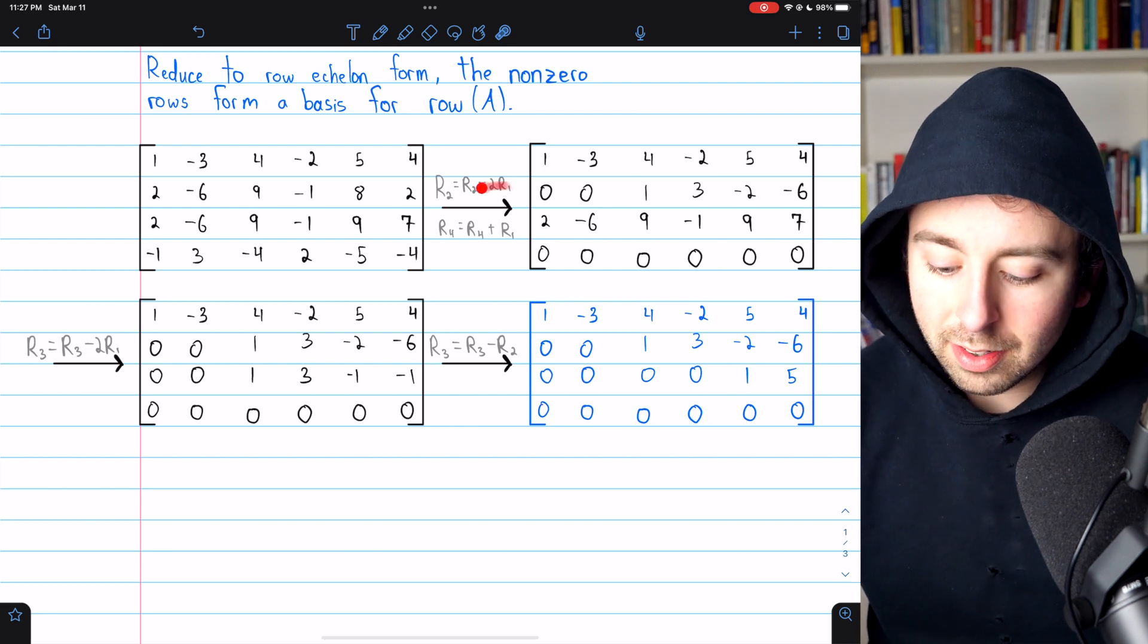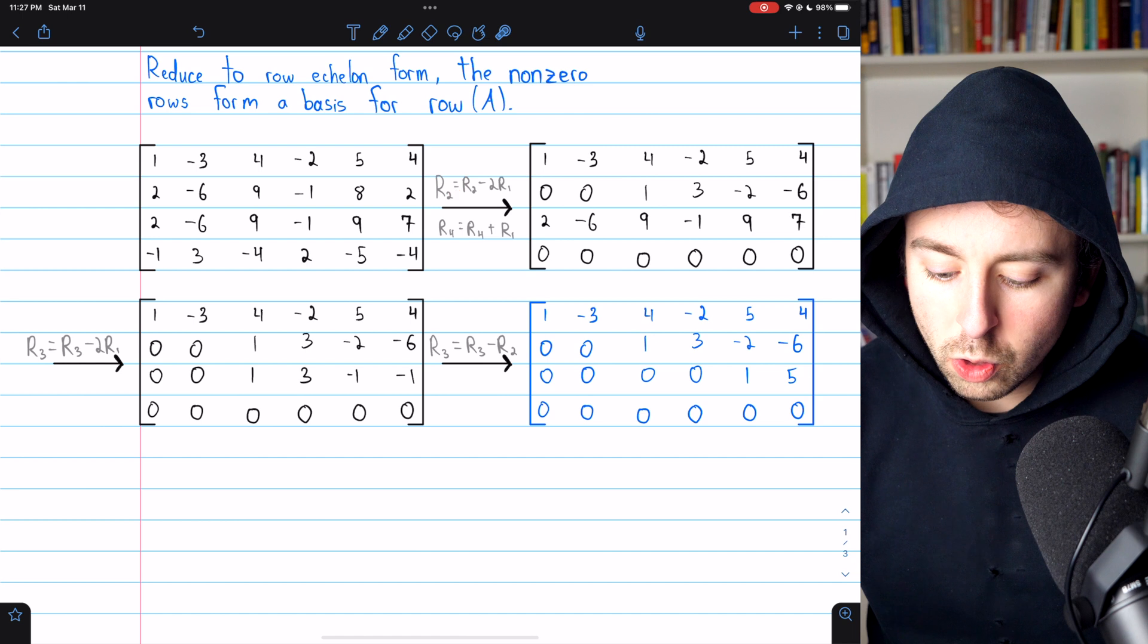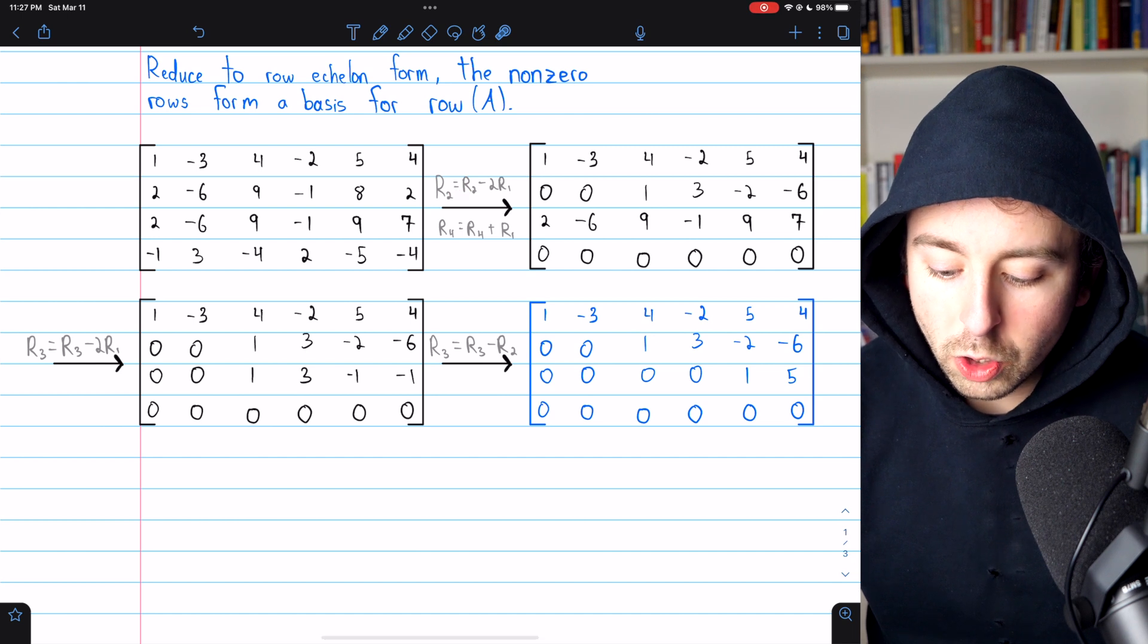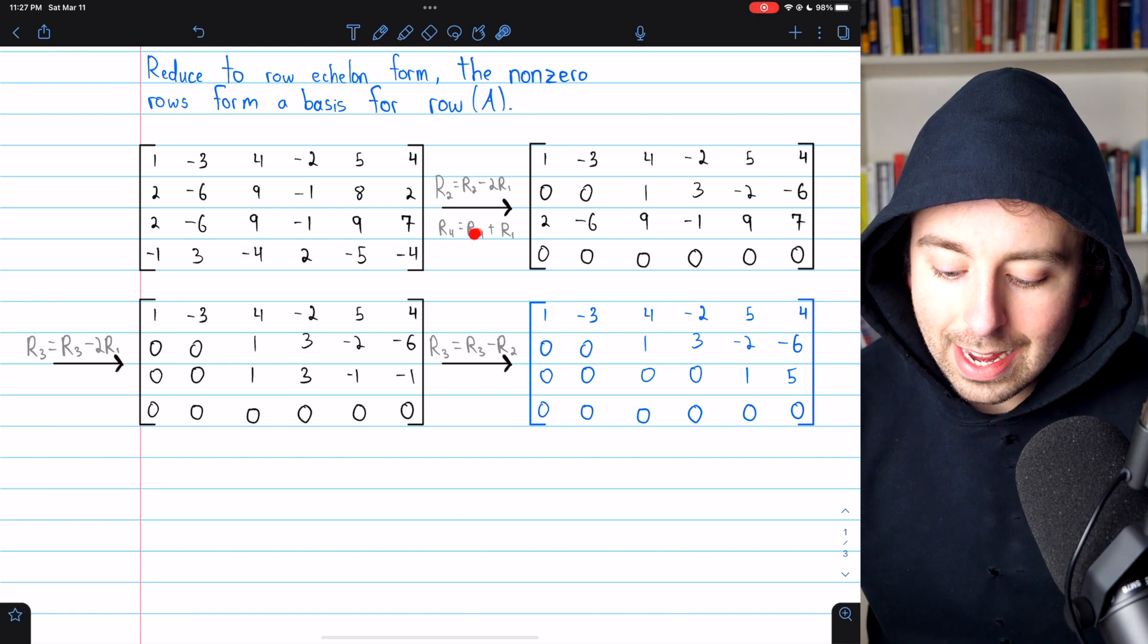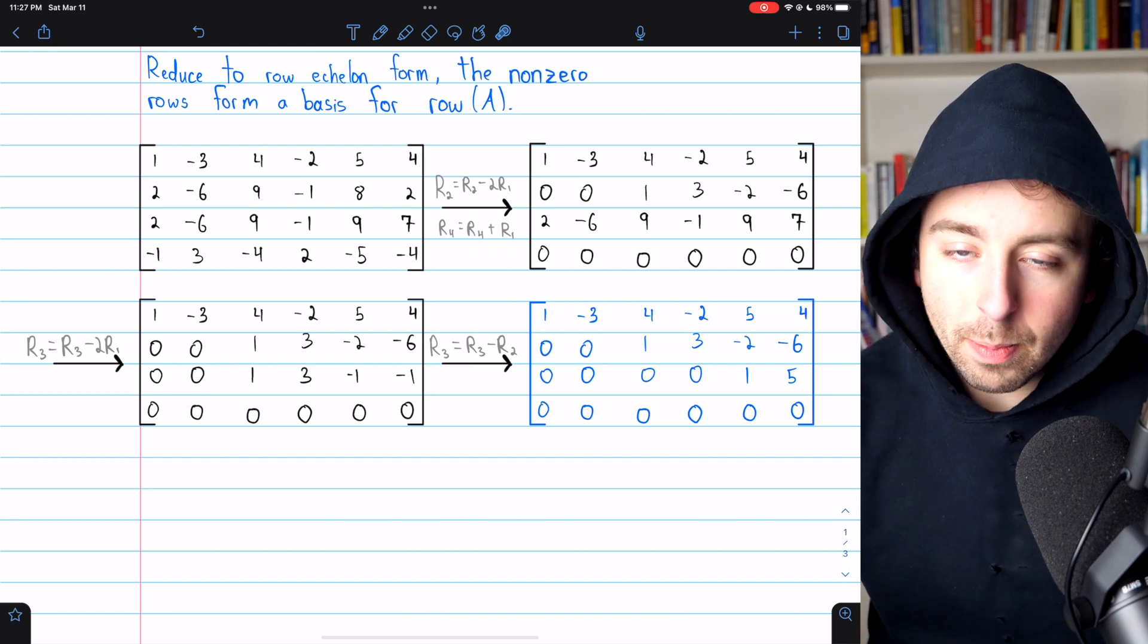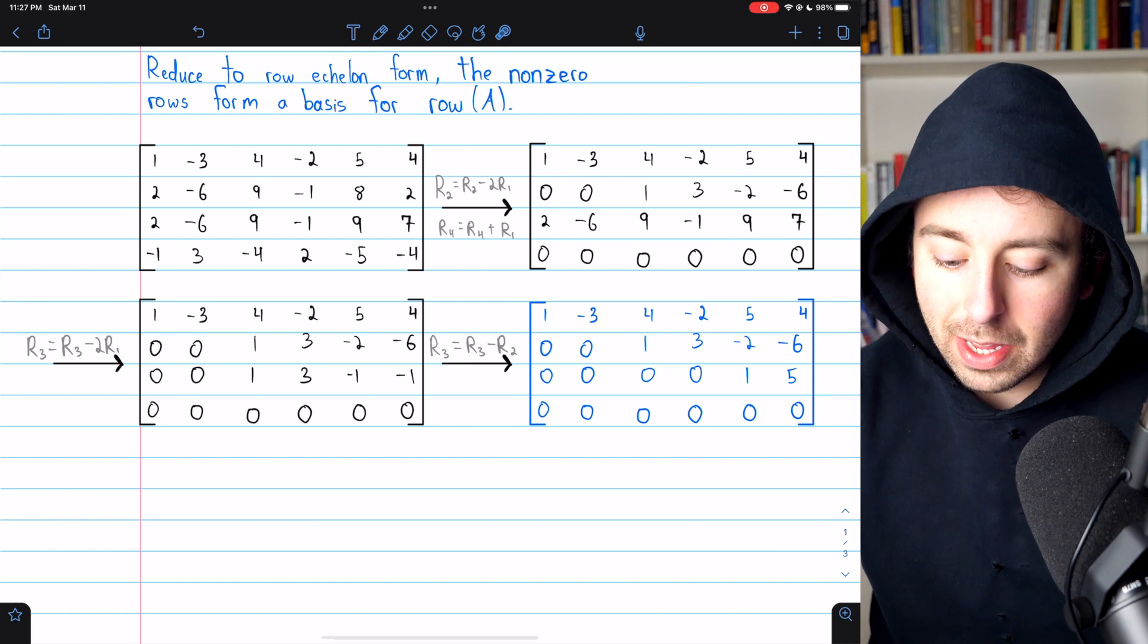Just for example, in this first step, we make row 2 equal to row 2 minus two copies of row 1, and row 4 we take and add one copy of row 1. That's how we get from here to here.